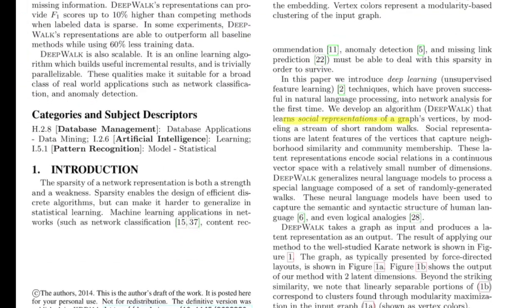Let's move forward. They learn social representations of graph vertices by modeling the stream of short random walks. So they mention about what exactly do they mean by social representations, which are latent features of vertices that capture neighborhood similarity and community membership.